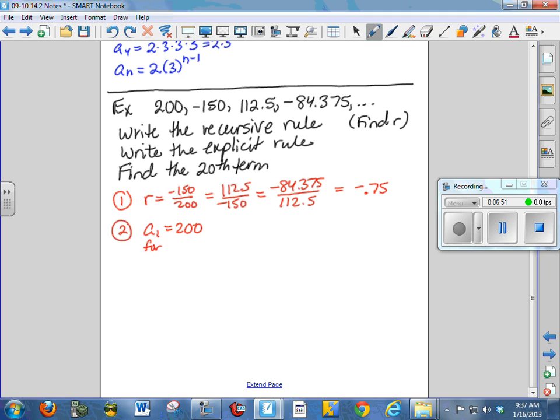So our recursive rule would be a sub 1 is equal to 200, and for n greater than or equal to 2, a sub n is, first term, 200, times negative 0.75 to the n minus 1.